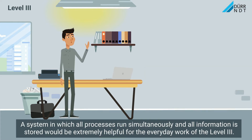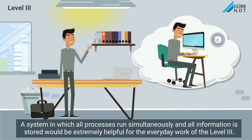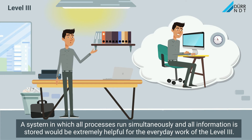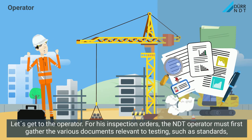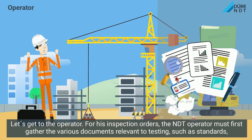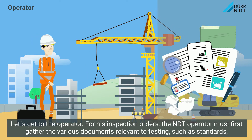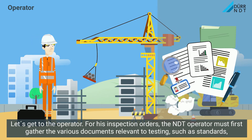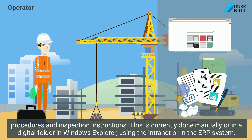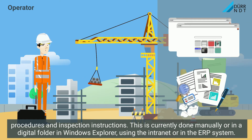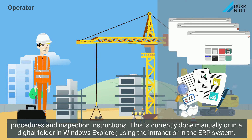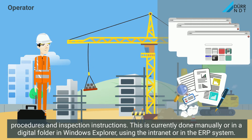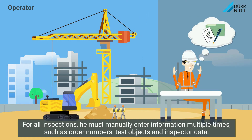A system in which all processes run simultaneously and all information is stored would be extremely helpful for the everyday work of the Level 3. For his inspection orders, the NDT operator must first gather the various documents relevant to testing, such as standards, procedures, and inspection instructions. This is currently done manually or in a digital folder in Windows Explorer, using the intranet or in the ERP system.